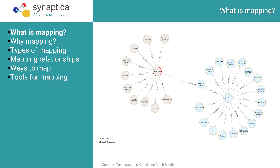Here you can see that the two terms 'agriculture,' represented with their closest hierarchical relationships and connected by a line in the middle, are in vocabularies shown in different colors — GEMET in blue on the right, and UNESCO in grayish on the left. I've established an equivalency relationship between 'agriculture' in both taxonomies.